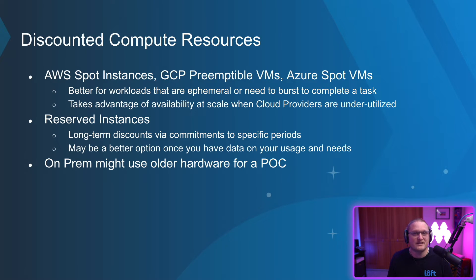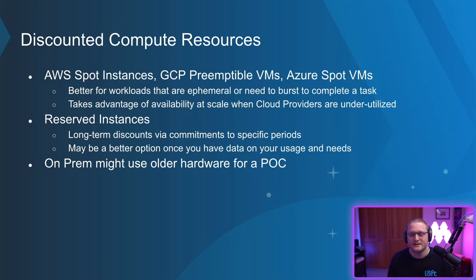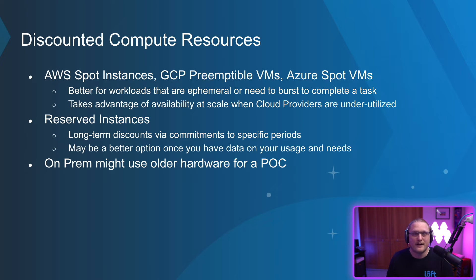What about discounted compute resources? AWS spot instances, GCP preemptible VMs, and Azure spot VMs are better for workloads that are ephemeral or need to burst to complete a task. They take advantage of availability at scale when cloud providers are underutilized, so you pay a lot less when it's available. You can also do reserved instances — long-term discounts via commitments to specific periods. This is a better option once you have data on your usage and needs. Once you've been running for a bit and you know roughly how much you'll need, you can get reserved instances and commit to running for the next six months or a year. The downside is you're locked in, but if you know you'll be using this long-term it's worth it. On-prem, you might use older hardware for a POC — if you've got hardware sitting around, that's your discounted on-prem compute.